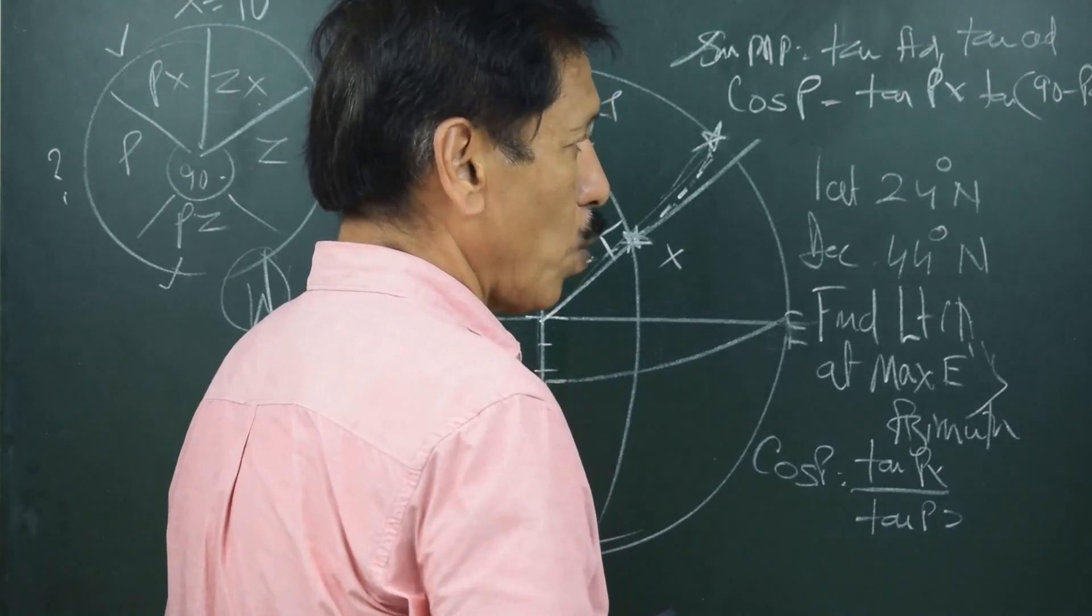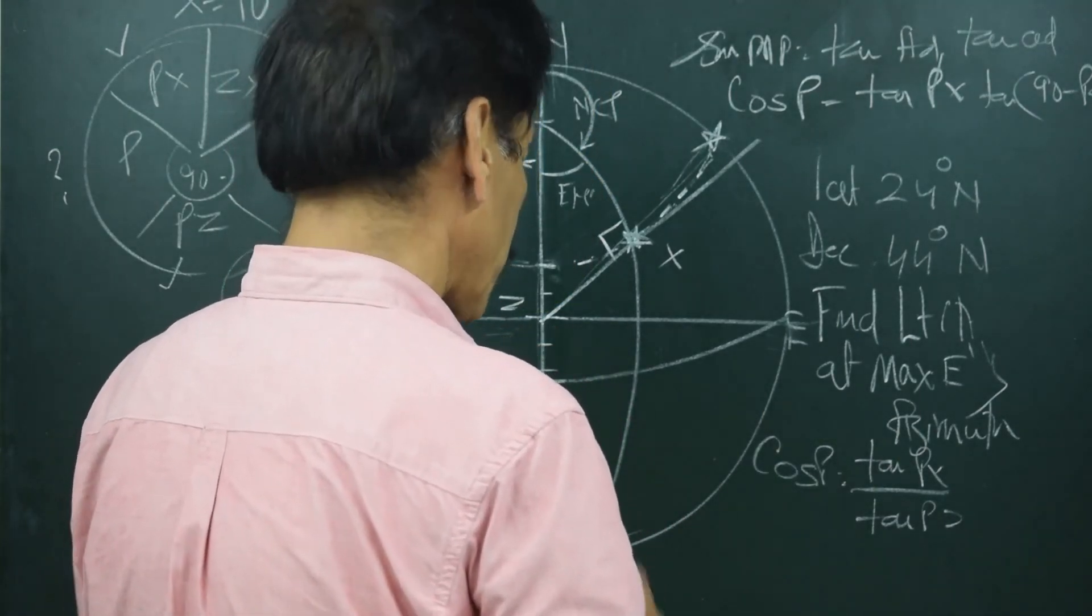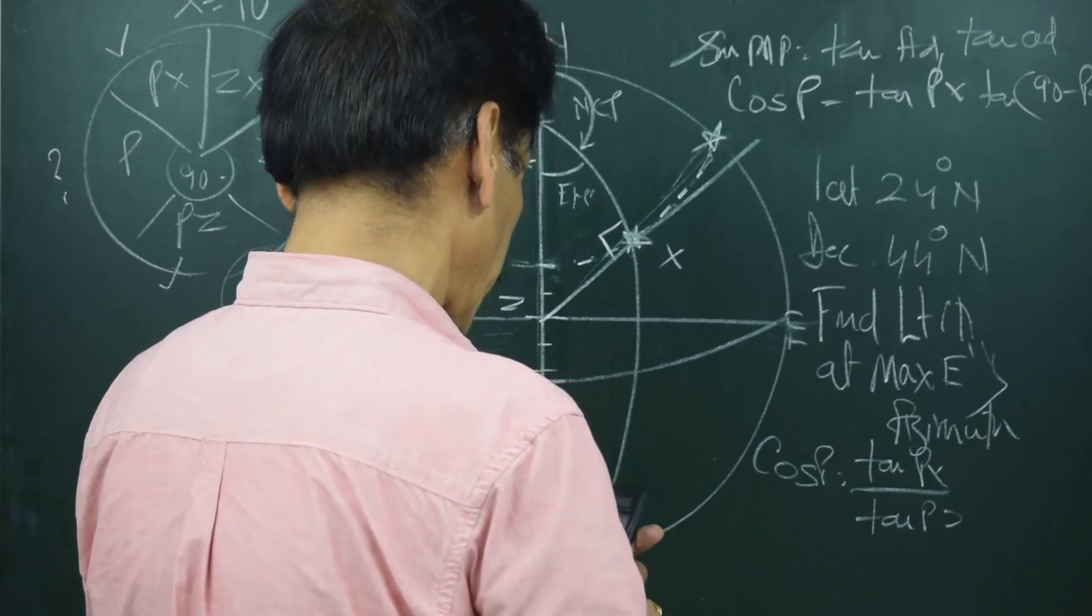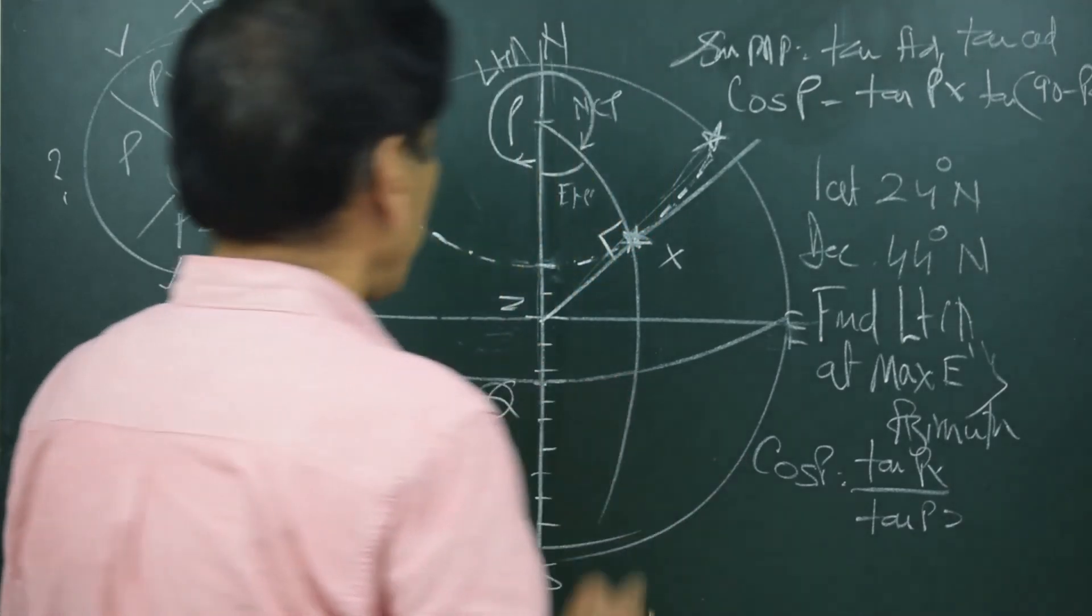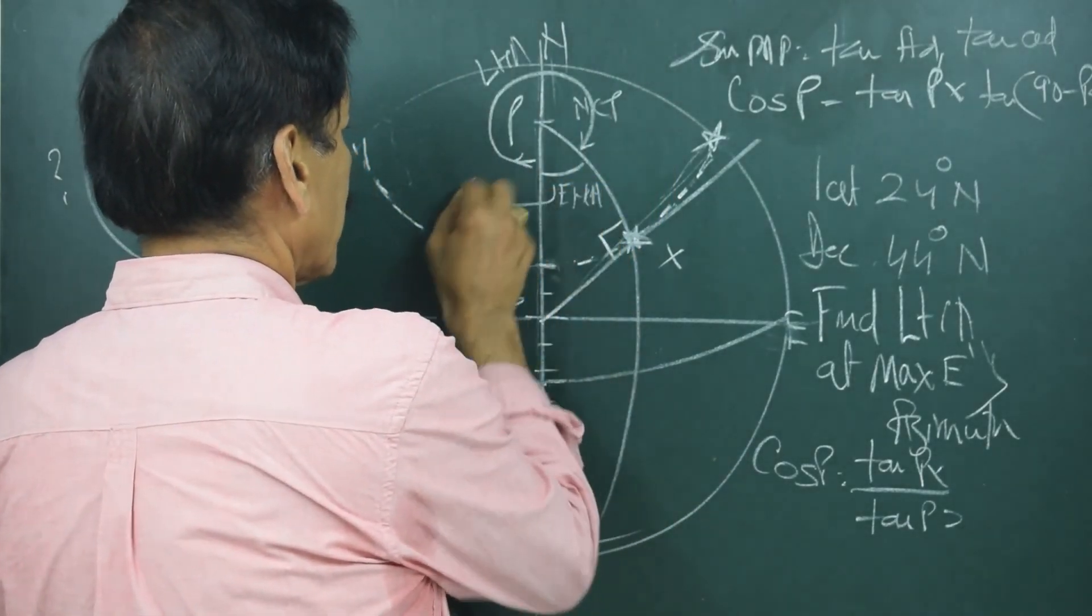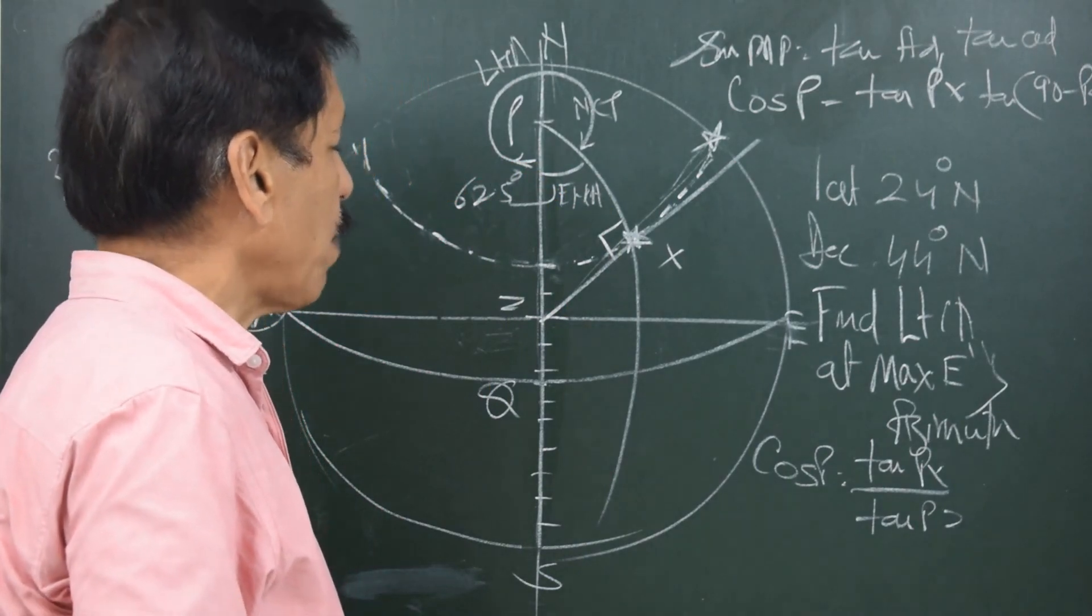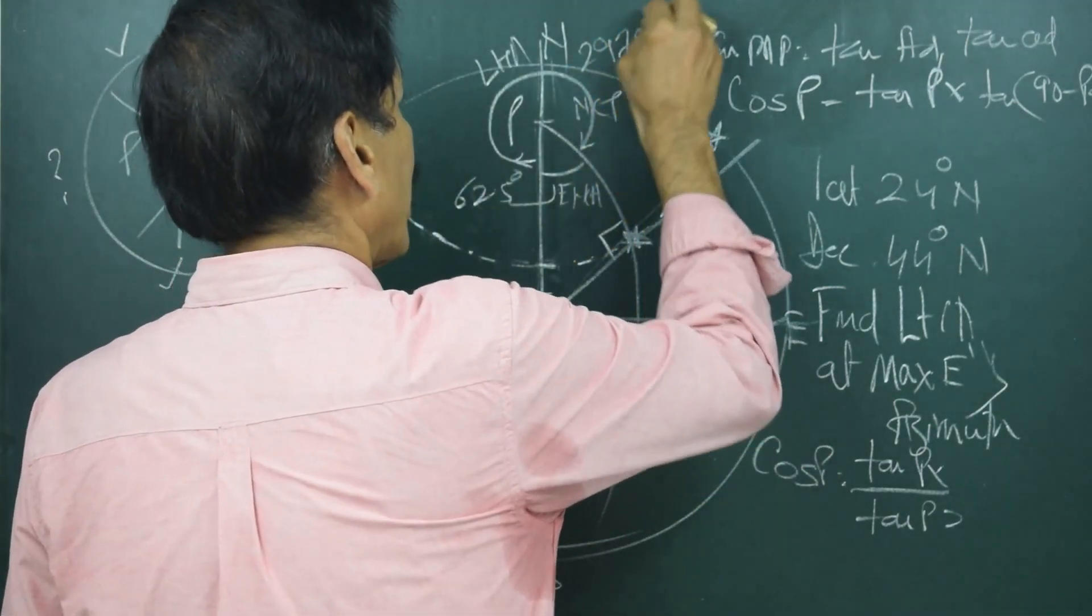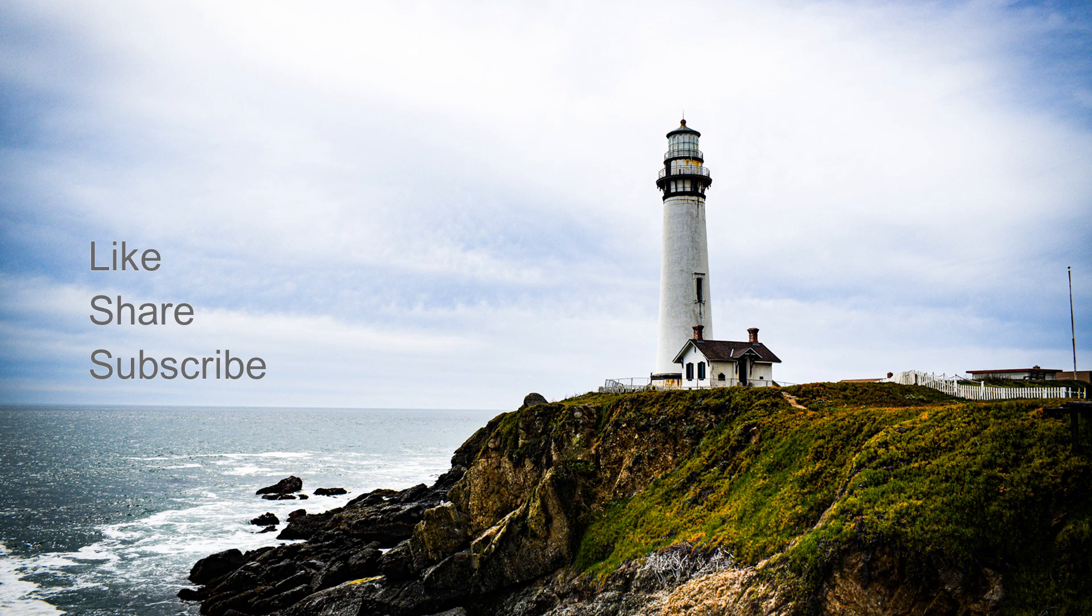Putting the values cos P will be equal to tan P, X that is 46 degrees divided by tan P, Z that is 66 degrees. Shift cos gives me 62.5. So this EHA which we have got is 62.5 degrees. And if the EHA is 62.5 degrees, then the LHA is 360 minus 62.5. So that will be 297.5. So this angle LHA is 297.5 when the body is at maximum easterly azimuth.